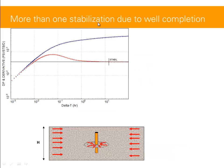You might have more than one stabilization, and that could be due to well completion. In this example with a cross-section, we've got a vertical well with radial flow regime near the wellbore in the horizontal plane. Further away from the well, at large distance, we still have the same radial flow regime in the horizontal plane across the entire net thickness of the reservoir. So when you look at the derivative plot, you've got only one stabilization.